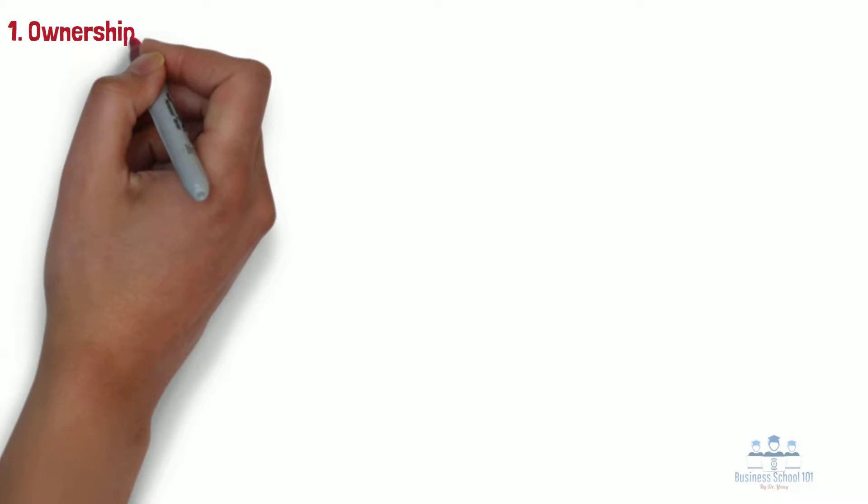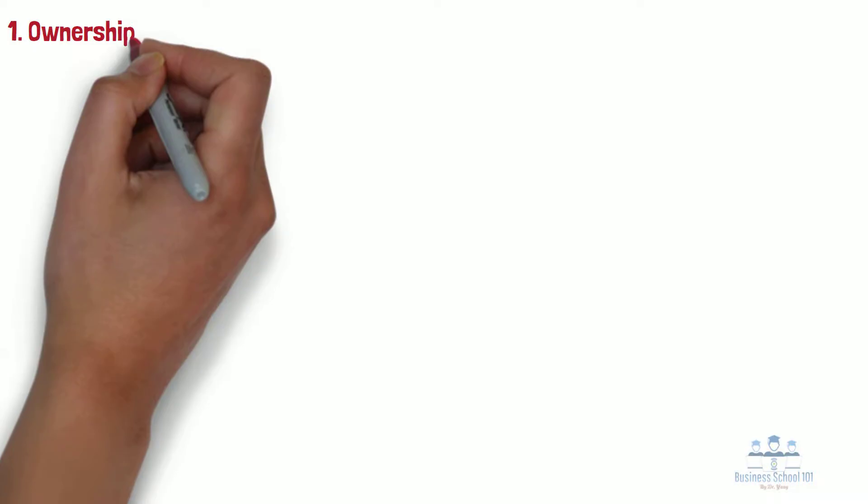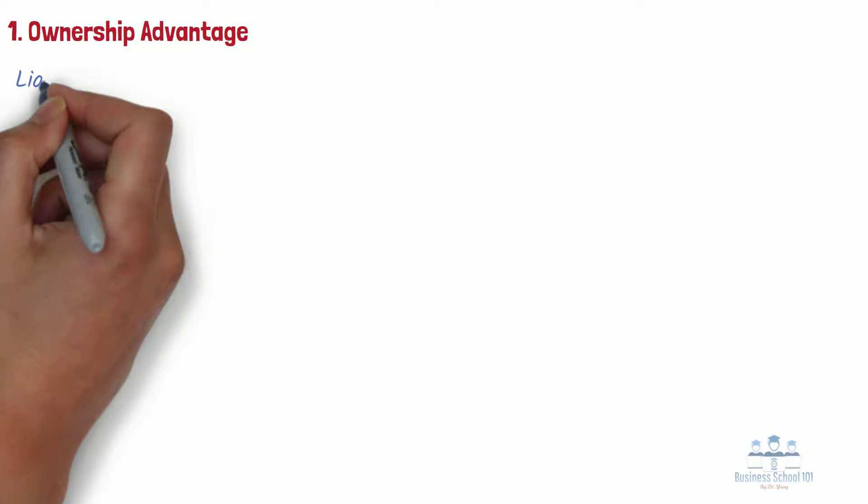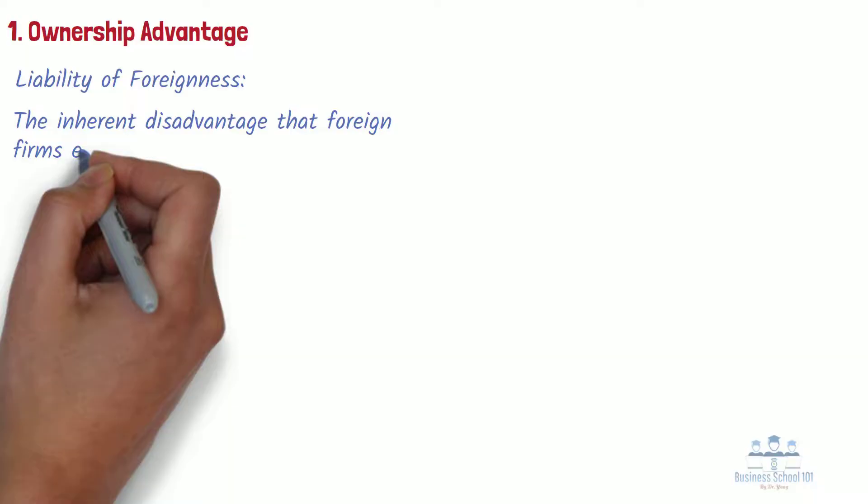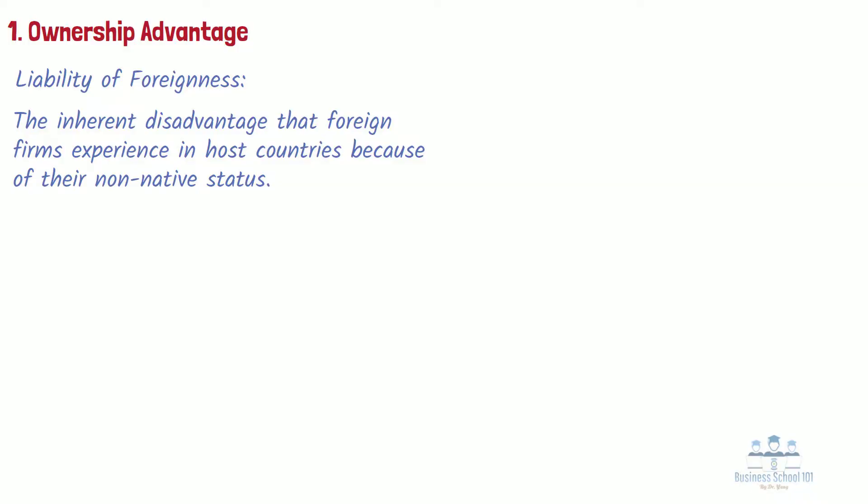Section 1: Ownership Advantage. First, a company needs an ownership advantage to overcome the liability of foreignness. The liability of foreignness is the inherent disadvantage that foreign firms experience in host countries because of their non-native status. These disadvantages vary from simply not speaking the local language to having limited knowledge on the local customer demands.